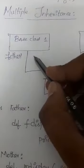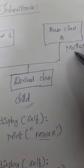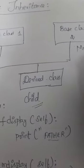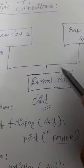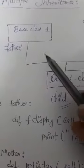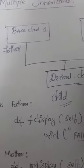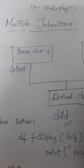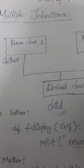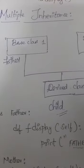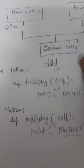Base class 1 is called the father and base class 2 is called the mother. A child class can be created with the help of a combination of both the father class and the mother class. Multiple inheritance means you have only one derived class and more than one base class.